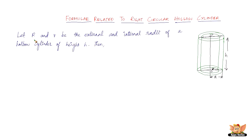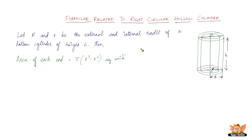When we've got capital R and small r as the external and the internal radii of a hollow cylinder of height h, then we've got the area of each end as the area of the bigger circle minus the area of the smaller circle. So pi capital R squared minus pi small r squared, which will be pi times (capital R squared minus small r squared) square units. That's the area of each end.